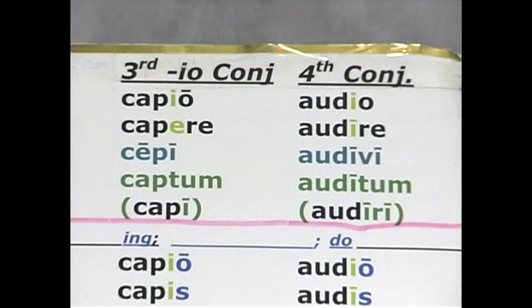Our fourth conjugation model verb is audio, audire, audivi, auditum — to hear. To form the passive indicative system, you add a different set of endings to the verb stem to form the various tenses. Those endings I've put on the board.